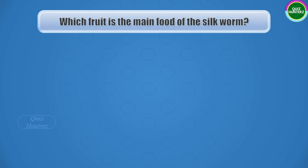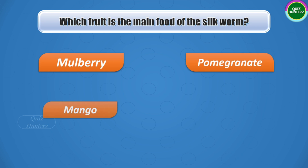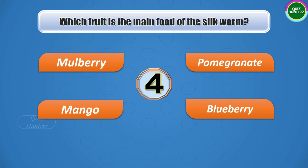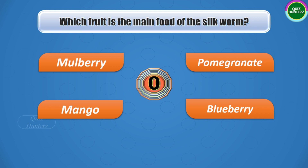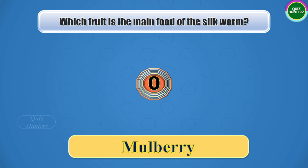Next question: which fruit is the main food of the silkworm? Options are mulberry, pomegranate, mango, or blueberry. Your time starts now. And the correct answer is mulberry.